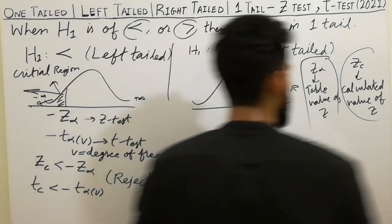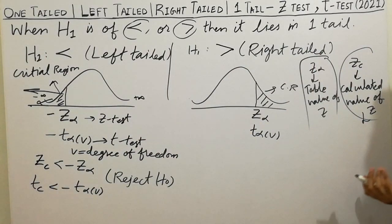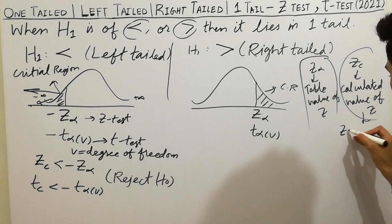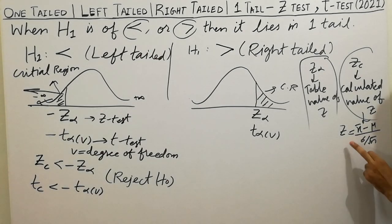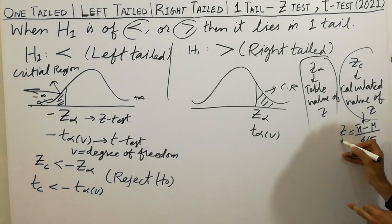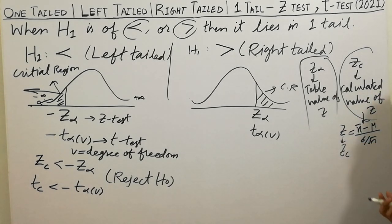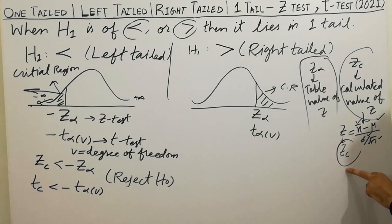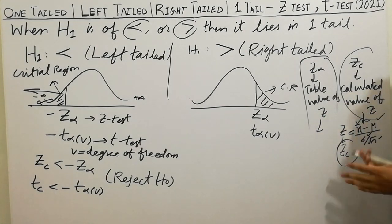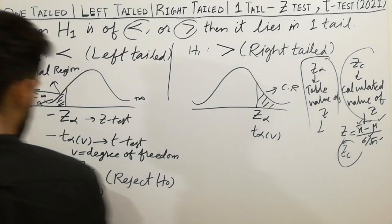The Z calculated value uses this formula: Z equals X-bar minus mu, divided by sigma over the square root of N. By substituting the values of X-bar, mu, and sigma, we get the Z calculated value. Z-alpha is the table value of Z, which we look up from statistical tables.